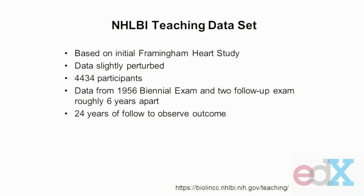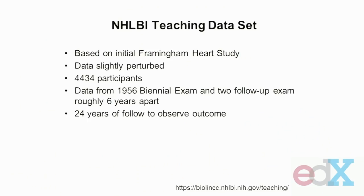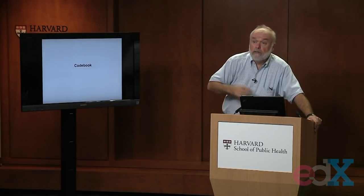The data in this teaching data set is essentially three exam cycles from the original Framingham cohort: the 1956 exam, where people were returning for their third or fourth follow-up exam, and at that examination certain risk factors were obtained; and two follow-up exams roughly six years apart, one around the 1962 period and one around the 1968 period. In addition to that, everyone was followed for 24 years, so we have 24 years of potential follow-up for each of these 4,434 people.